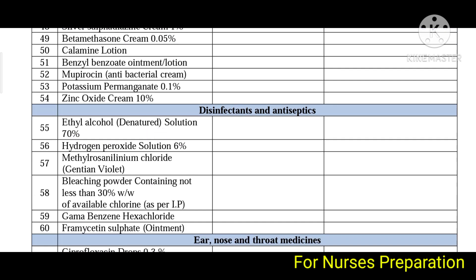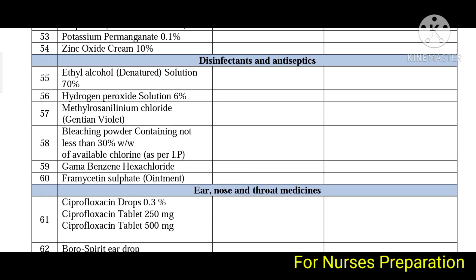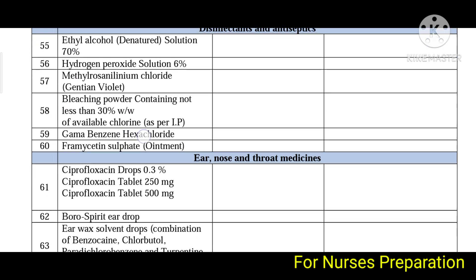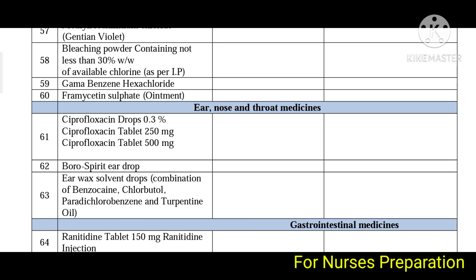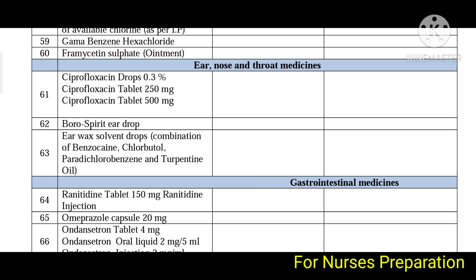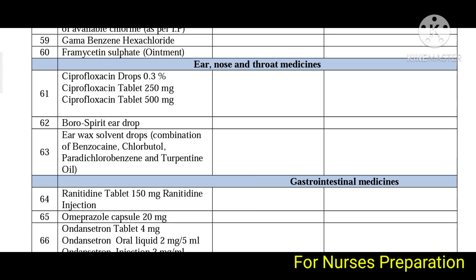Disinfectants and antiseptics include ethyl alcohol solution 70%, hydrogen peroxide solution 6%, cetrimide, bleaching powder containing not less than 30% available chlorine, gamma benzene hexachloride (feramesutine sulphate), and ciprofloxacin. For nose, ear and throat medicines: ciprofloxacin borospirit ear drops and earwax solvent drops are included.